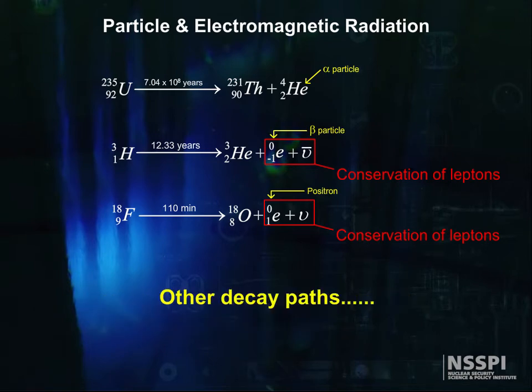Finally, there are other decay paths. Low Z nuclei can also kick out protons or neutrons from the nucleus directly. These reactions are rare, but useful. There are other decay paths besides this, but let's stop here.